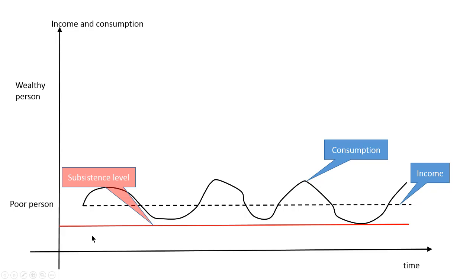And this red line represents what is called the subsistence level. The other possible name for that is survival level. If a person consumes less than this level, then that person cannot survive.